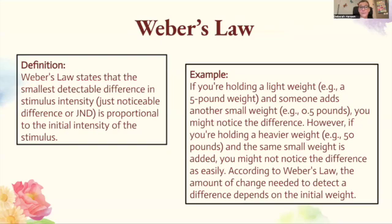Weber's law states that the smallest detectable difference in stimulus intensity — your just noticeable difference — is proportional to the initial intensity of the stimulus. For example, if you're holding a light weight of five pounds and someone adds another half pound, you might notice the difference. However, if you're holding a heavier weight like 50 pounds and the same small weight is added, you might not notice the difference as easily. According to Weber's law, the amount of change needed to detect a difference depends on the initial weight.